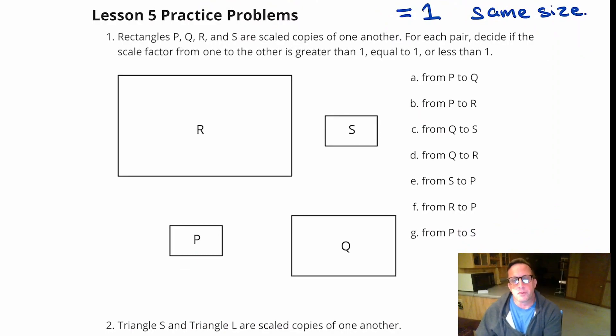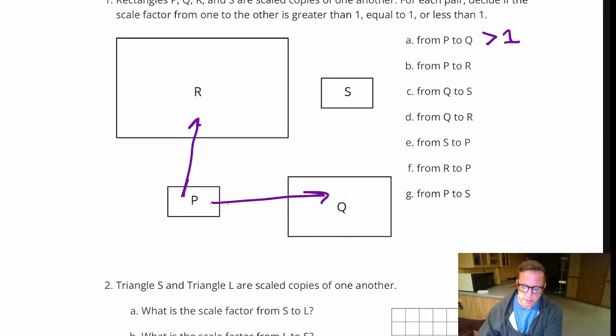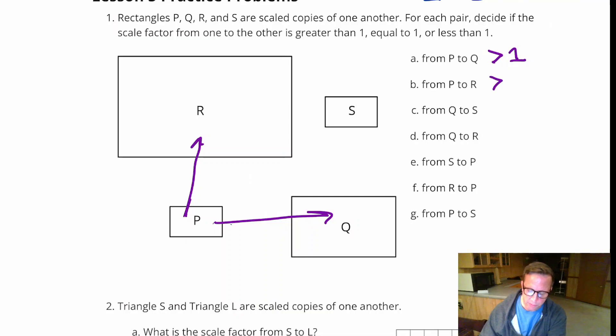Okay, so for the first one it says from P to Q. From P to Q, right there, that's definitely getting bigger. So that is greater than 1. From P to R, right here, P to R, that is definitely bigger. So that's greater than 1.